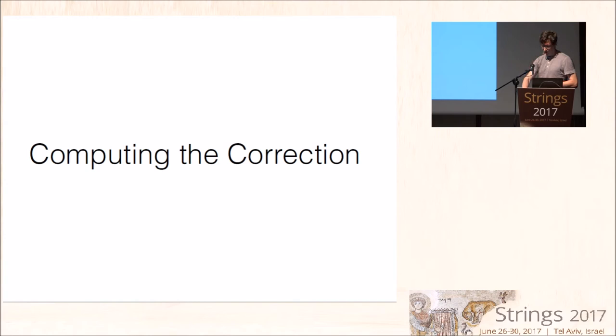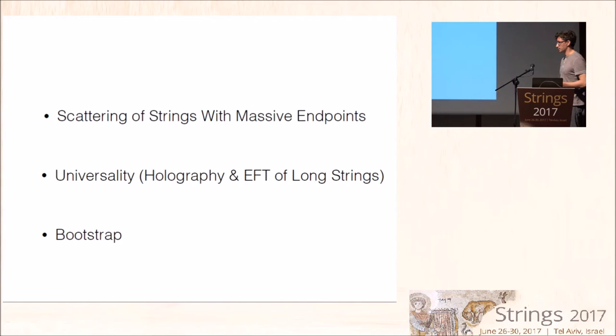So, let me now proceed to how do we compute this correction. I will do it in three parts. First, I will describe you a computation which will spit out this result. Then, I will motivate this computation using a holographic picture and an effective theory of long strings. And then, I will present the bootstrap analysis. Keep in mind, always we have the same object amplitude, but it will take very different shapes in different parts of the talk.